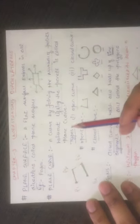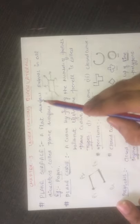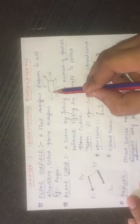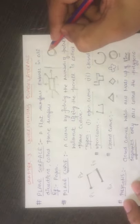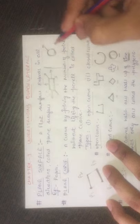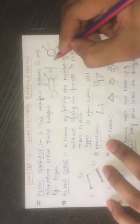Plane surface - a flat surface that extends in all directions is called a plane surface. You have a surface, any surface, like this one or this one. You have to extend it - extend means you have to extrude - in any direction. That surface is known as a plane surface, if it is extended in any direction.